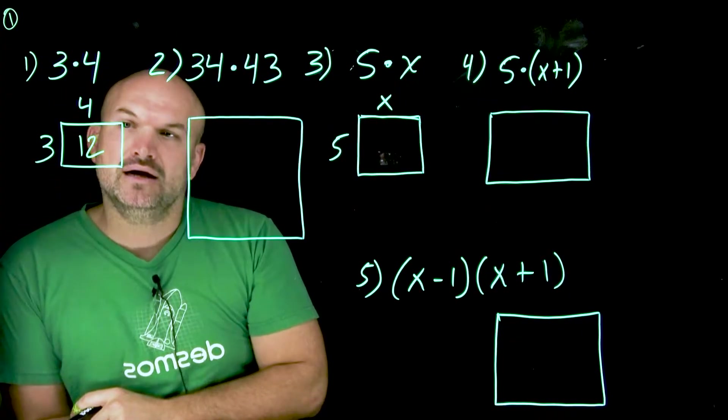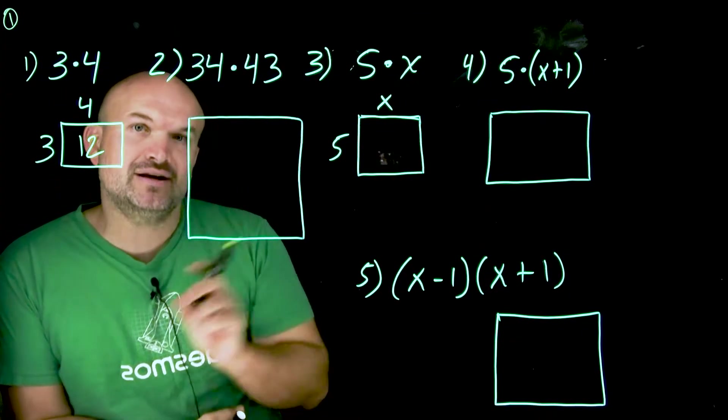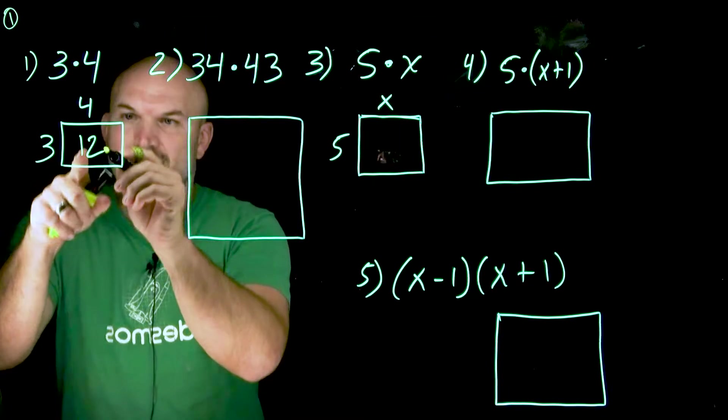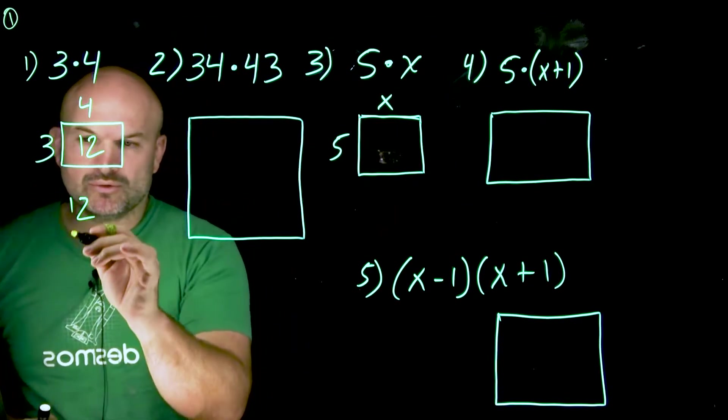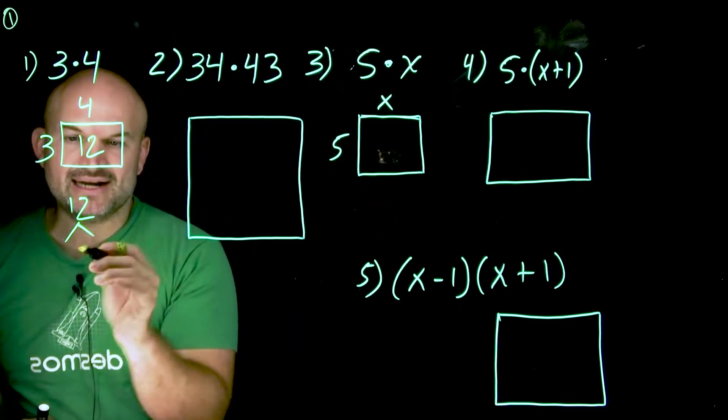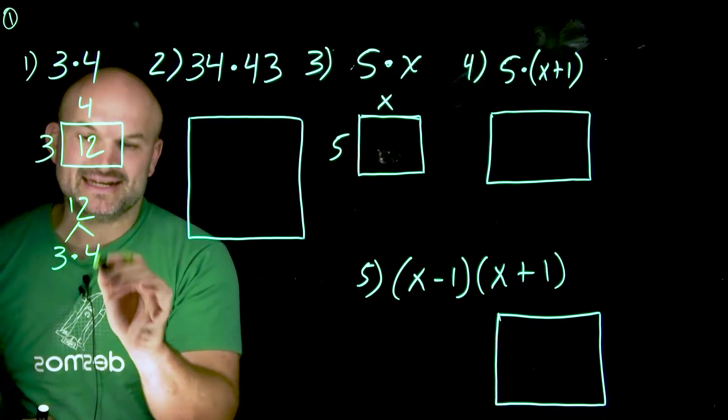12 represents the area of that rectangle. This is going to be very important because when we're given a number, and remember, we want to factor it. What we're trying to do is take that number and rewrite it as an expression, as a product of an expression.